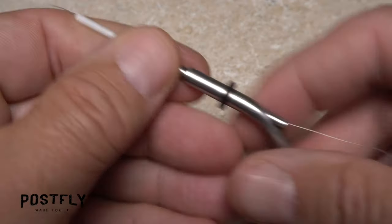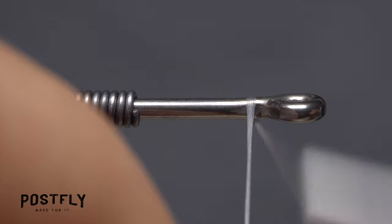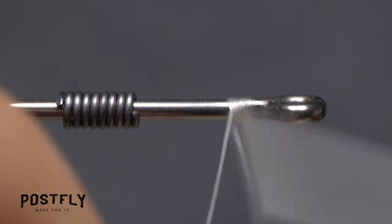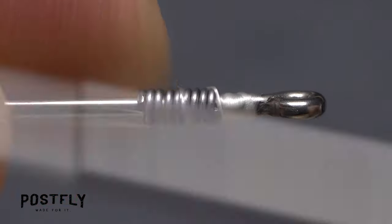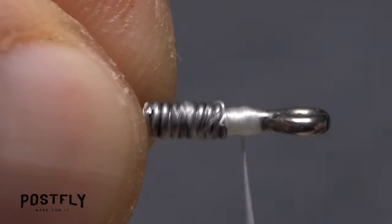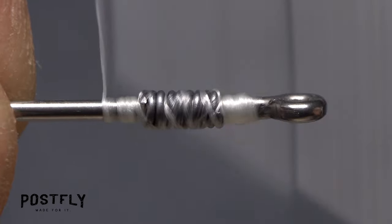Load a bobbin with a spool of white uni-thread and get it started on the hook shank behind the eye. Take a few wraps rearward before snipping off the excess tag. You can then slide the wire wraps up to the thread and take wraps over top of them to secure the wire to the hook shank.